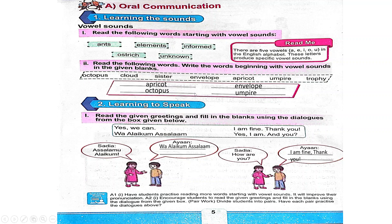Next vowel is U. Do we have a U word? Let's see — is it octopus? No. Cloud? No. Sister? No. Envelope? No. Apricot? No. Umpire? Yes! It is umpire. So we will write umpire here.